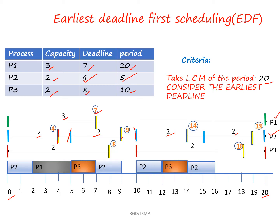For P3, it has to execute 2 times before deadline 8. And since for every 10-unit interval it must execute 2 times, 8+10=18, so before 18 it also has to execute 2 times.